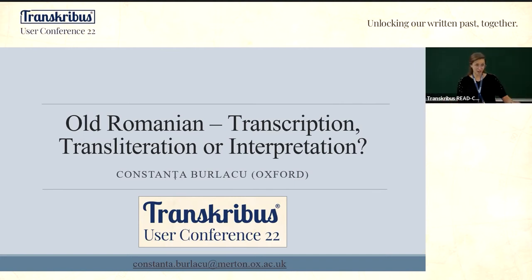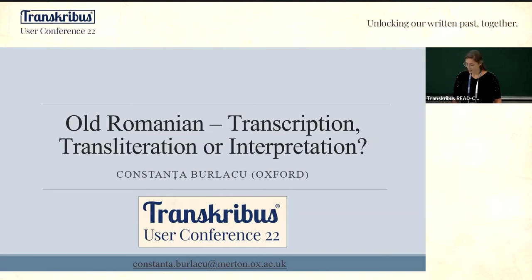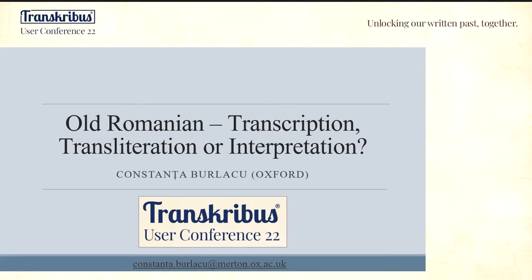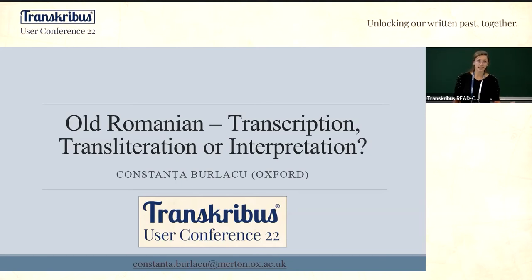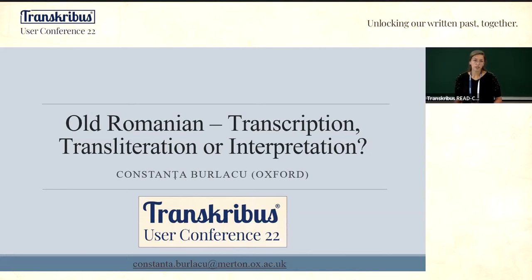I'm not sure how much of a solution I'll offer, but I would definitely like to offer some questions. So, Old Romanian is dated between the very beginning of the 16th century — that's when we have our first text — and the end of the 18th century. Scholars have been experimenting with this material for some time.